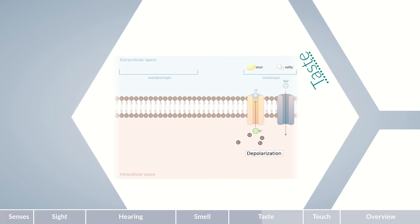The salty taste is detected using epithelial sodium channels, which directly absorb the sodium ions present in salty food, also leading to an increased positive charge in the cytosol and cell depolarization. In contrast, the taste receptors for bitter, sweet, and umami are metabotropic, meaning they initiate a signaling cascade and can only indirectly depolarize the cell.